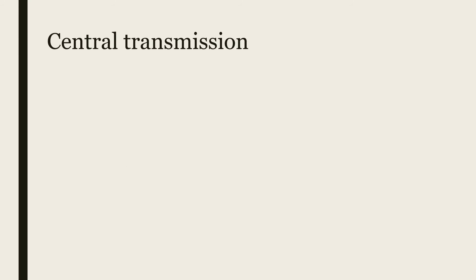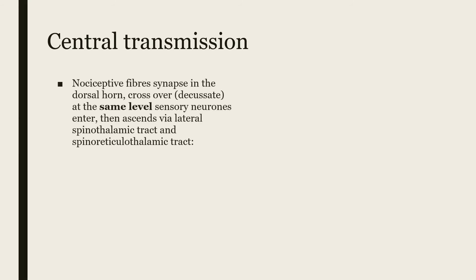Generally speaking, nociceptive fibers synapse in the dorsal horn at their level of entry, then cross over or decussate at the same level that the sensory neurons enter. They can then ascend via either the lateral spinothalamic tract or the spinoreticulothalamic tract.